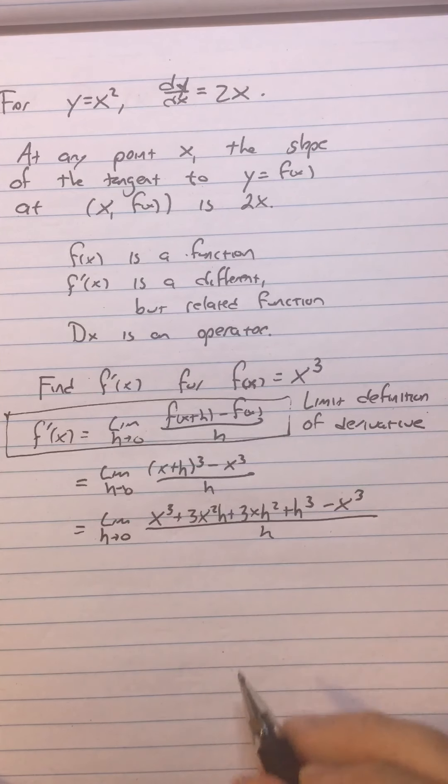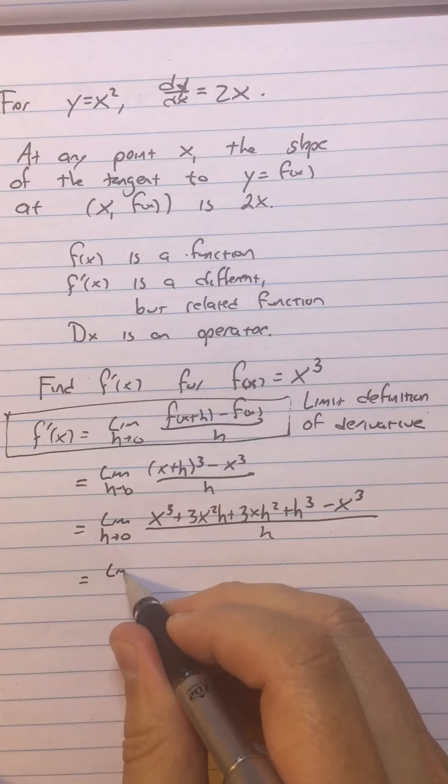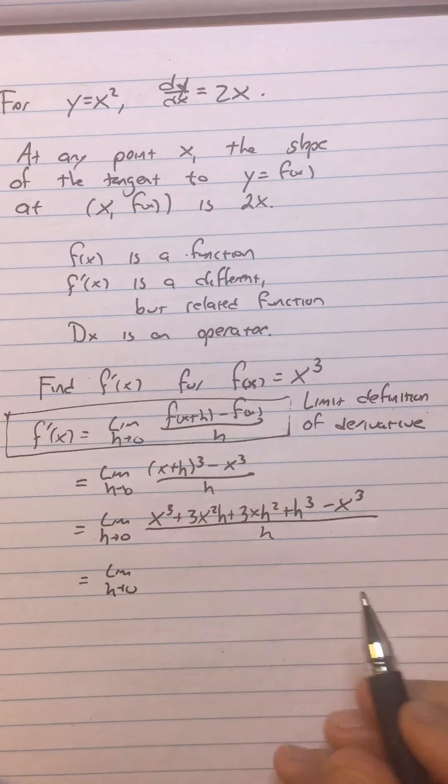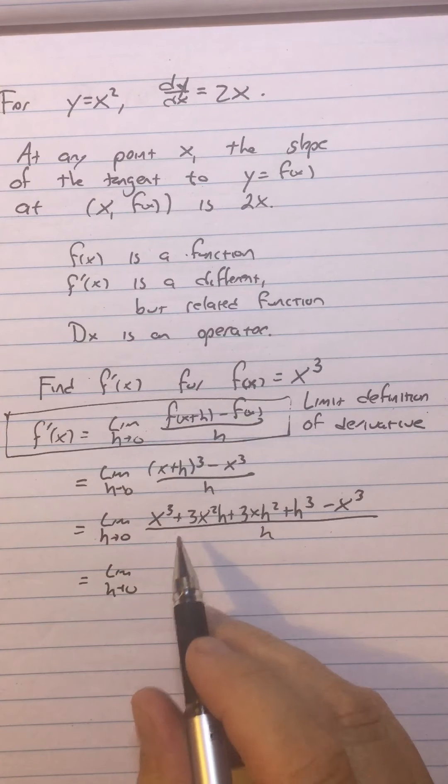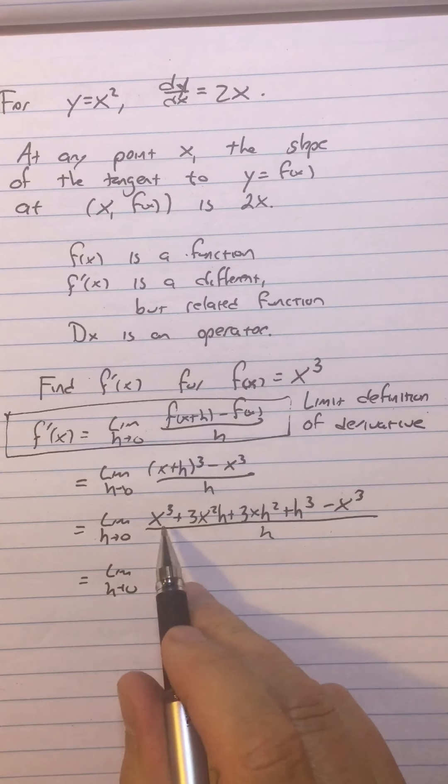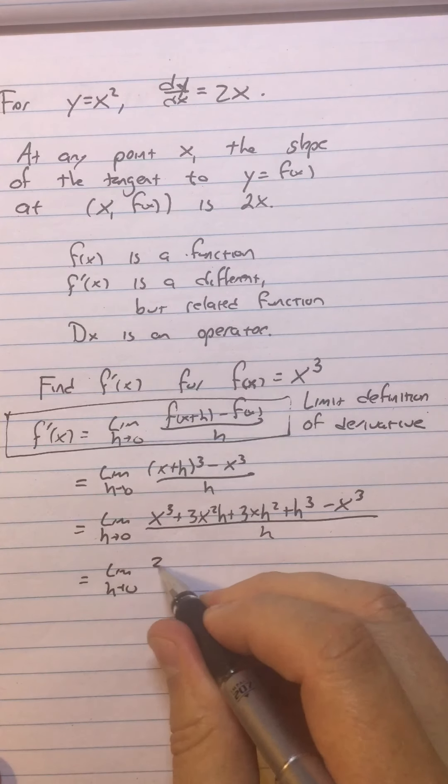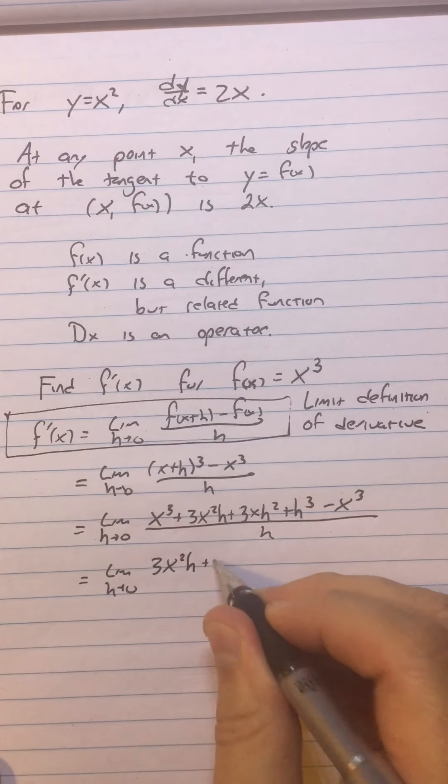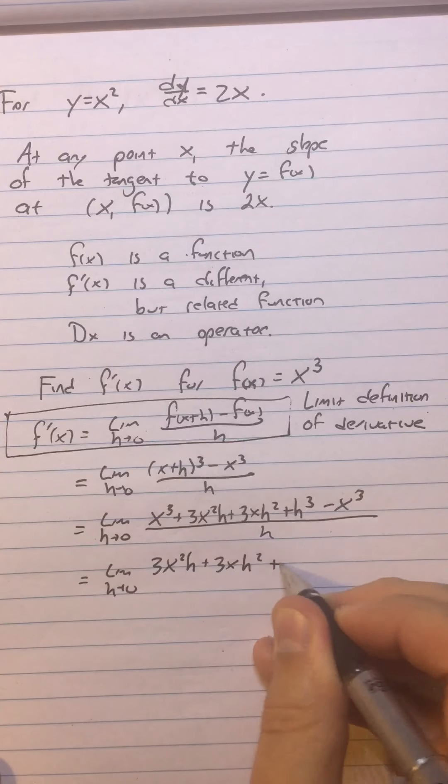In the denominator, we got the h. So then that equals limit as h approaches 0. Every time, terms that do not contain h will always cancel out. That is imperative to this process.